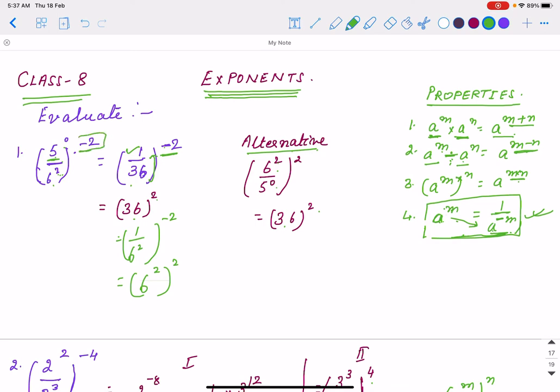Or, as it is negative power, we take this number's reciprocal. That means 5 to the power 0 will be the denominator, 6 square will be in numerator. Now we simplify: 6 to the power 4 or 36 square, depends on what the question is asking. And 5 to the power 0 is 1, that will be 1.